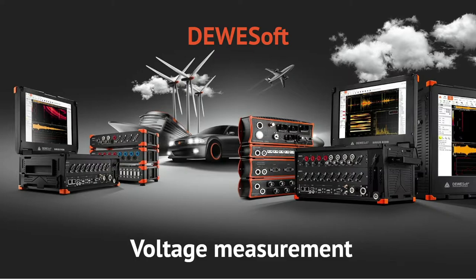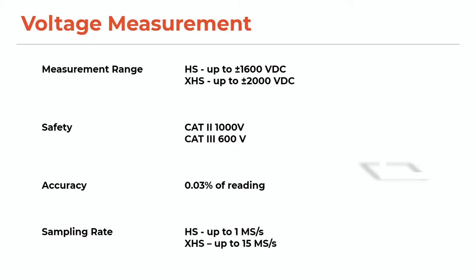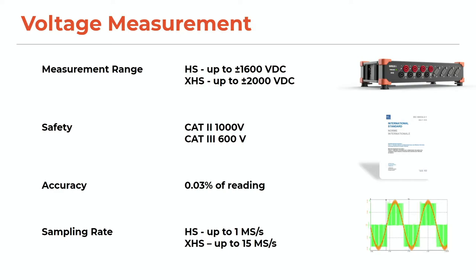Let's have a quick look at the voltage amplifiers. Devisoft has direct voltage inputs up to 1600 volts DC for the high-speed units and up to 2 kilovolts DC for the XHS unit. Both units have CAT 3000-volt and CAT 2600-volt safety ratings, an accuracy of 0.03% of reading, a sampling rate for the high-speed up to 1 mega sample per second, and the XHS up to 15 mega samples per second.